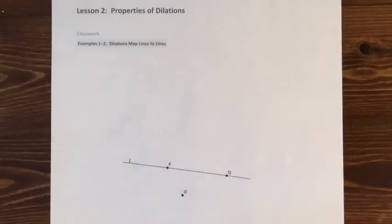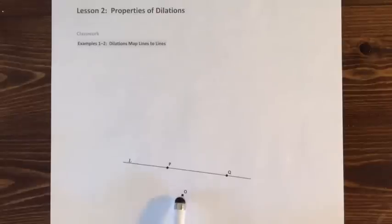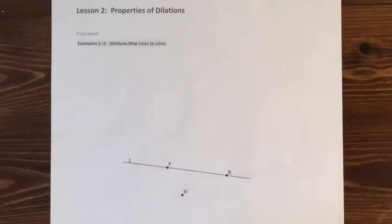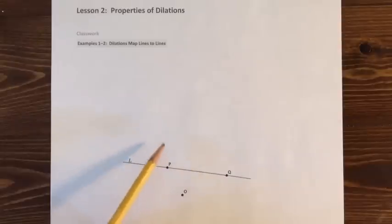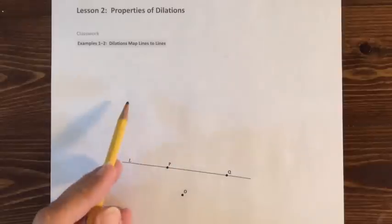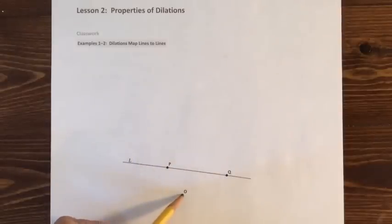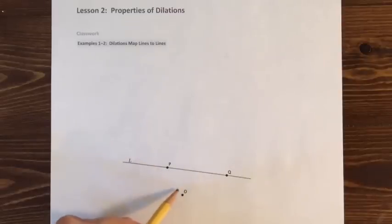Here's lesson two. The title is Properties of Dilation. In lesson one, we looked at the definition of a dilation and we saw that there was a center for a dilation. In this diagram, the center of dilation is going to be O. The other thing we need for a dilation is the scale factor, which we're calling R. A scale factor greater than one pushes points away from the center, whereas a scale factor between zero and one pulls points closer to the center.